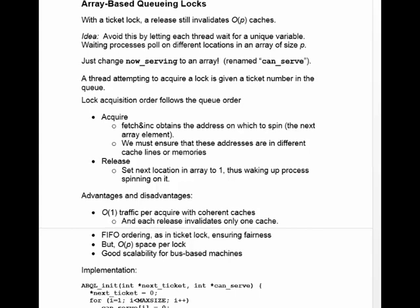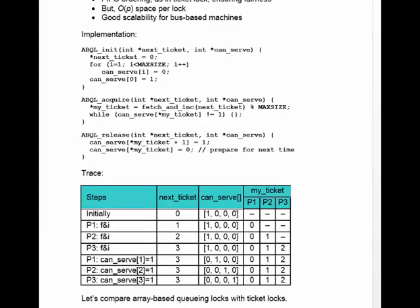Because we solved the traffic problem, we make it more scalable for bus-based machines. The init method sets the next ticket variable equal to zero, just like it did for ticket locks. Then you enter a loop setting all of the canServe variables to zero — that basically says that none of those threads can enter the critical section. Then you finish up by allowing thread zero to enter the critical section by setting its canServe variable equal to one.